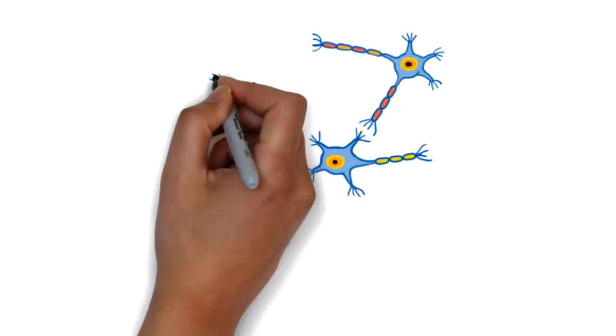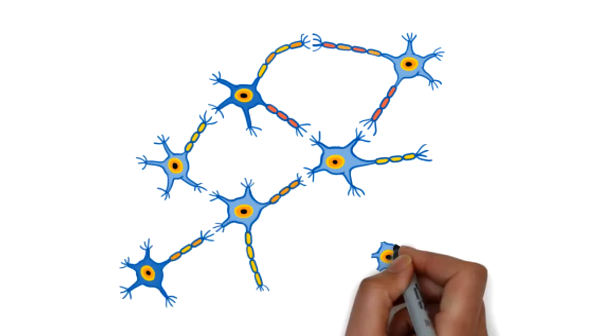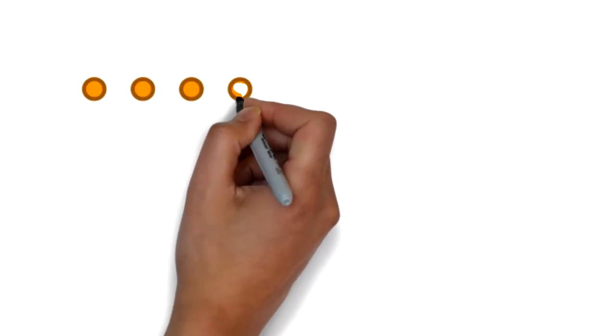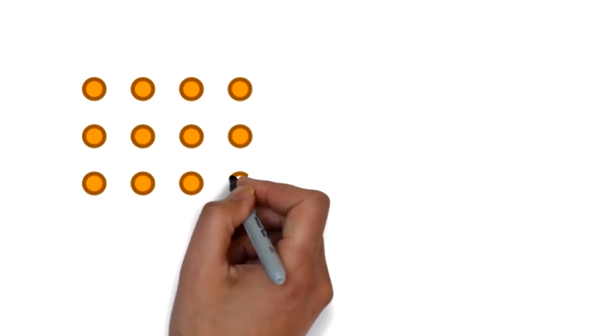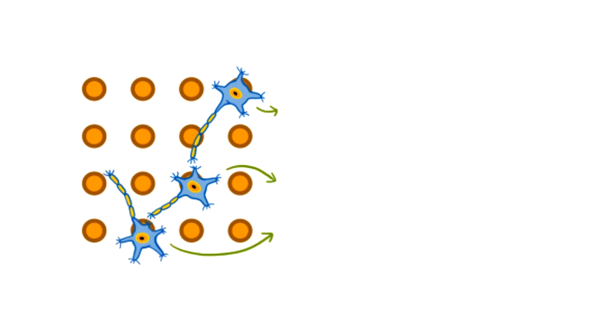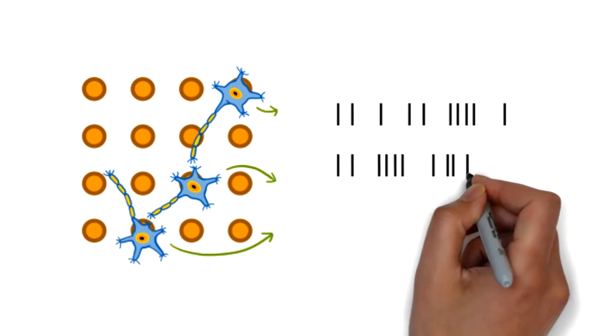In the dish, Glutoneurons connect with each other to form a spontaneously active neural network. This spontaneous activity can be measured on a multi-electrode array, or MEA, where each electrode detects the activity of the overlying neurons and displays it in a raster plot in real time.